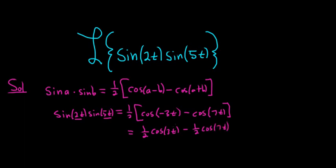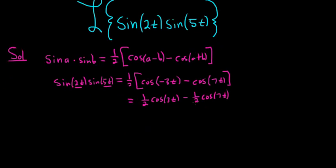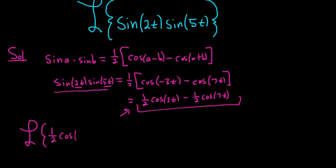Okay, good stuff. Now we can take the Laplace transform of this. So we're just going to take the Laplace transform of 1/2 cosine 3t minus 1/2 cosine 7t.